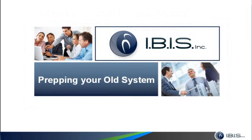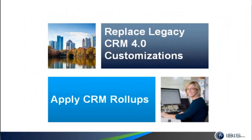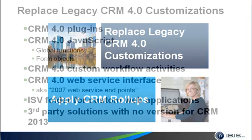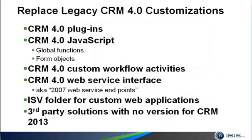Now that you know your old system requirements, we're going to talk about how to prep your current system for the upgrade. There are two main components to the prep: you need to replace legacy CRM 4.0 code, and you need to apply CRM roll-ups to your environment. There's a lot to that first one, so we're going to break that down. In CRM 4.0, they had an entirely different model for writing customizations, whether it be plugins or JavaScript that ran when you opened a form.